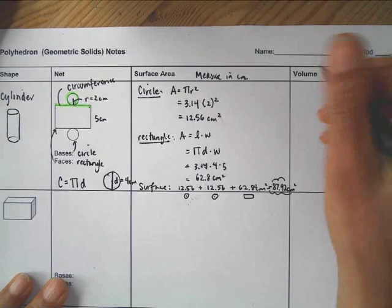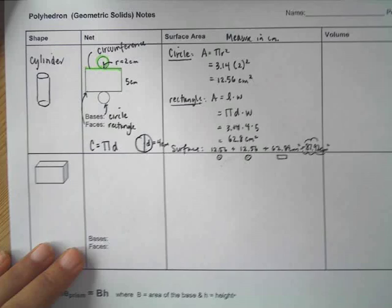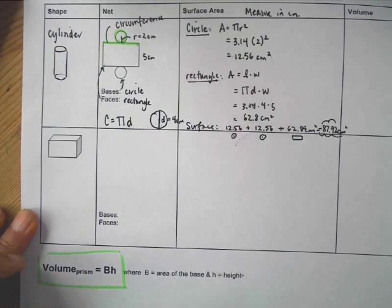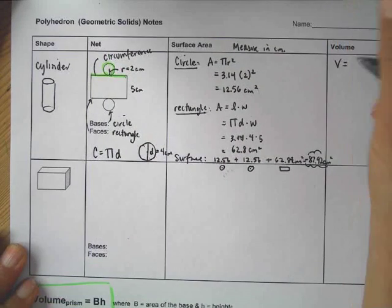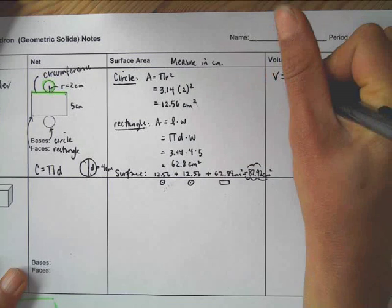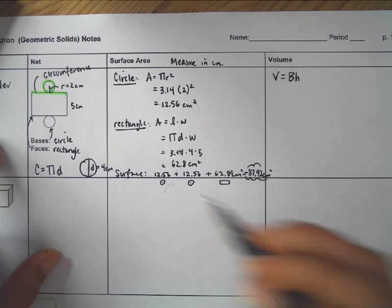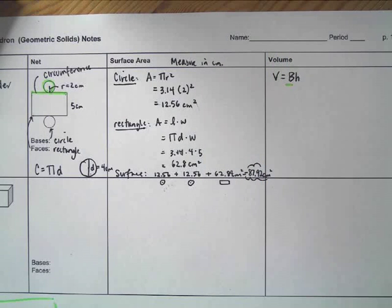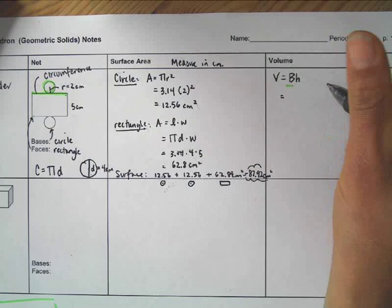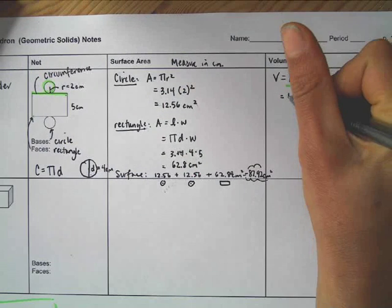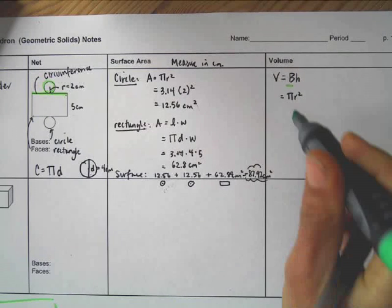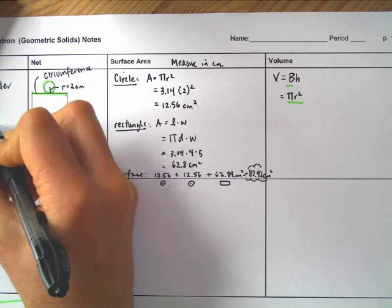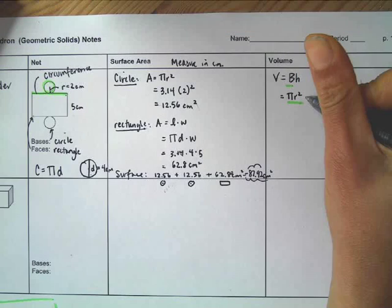Now for the volume, we talked about that the general formula for volume of a prism is volume equals base times height. And when we're doing that, we are writing it as a capital B, because we're talking about the base shape. We're talking about that right there. And what is that base area? To find the area of a circle, it's pi r squared. So we're looking for the area of the base times the height. So the area of the circle is pi r squared times the height.